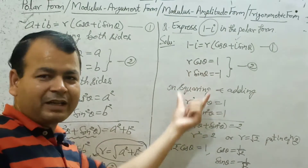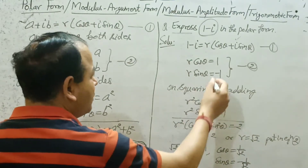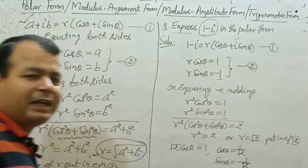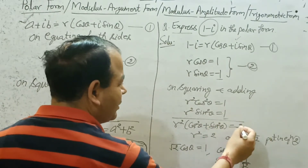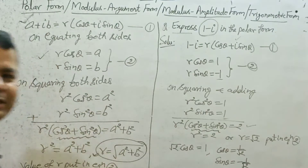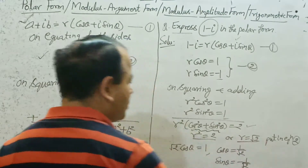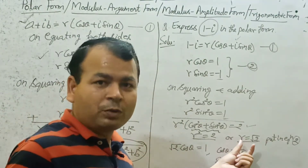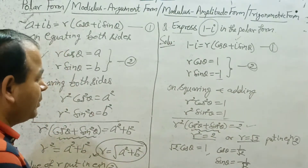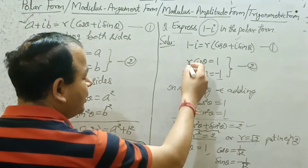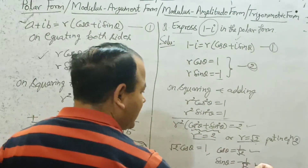On squaring and adding: R squared cos squared theta equals 1, and R squared sin squared theta equals 1 (since (−1)² = 1). Adding gives R squared times (cos squared theta plus sin squared theta) equals 1 plus 1 equals 2. Since cos²θ + sin²θ = 1, we get R squared equals 2, so R equals root 2 — the modulus. Putting R = √2 in equation two: cos theta equals 1 upon root 2, and sin theta equals minus 1 upon root 2.